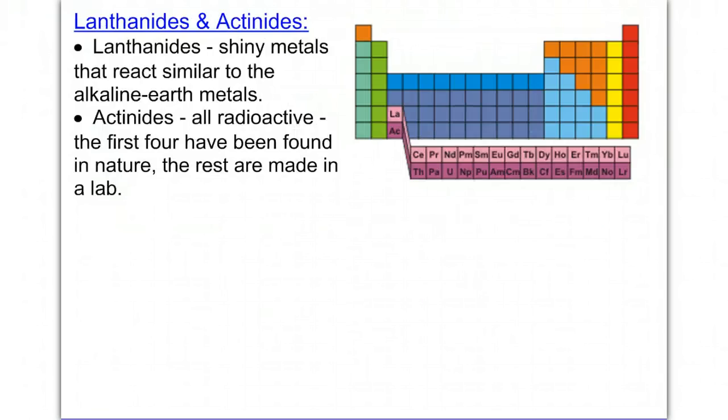The lanthanides and the actinides are located in the bottom two rows of the periodic table. The lanthanides are shiny metals that react similar to the alkaline earth metals. The actinides are all radioactive. The first 4 have been found in nature, and the rest were made in a lab.